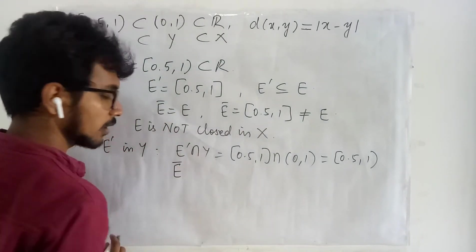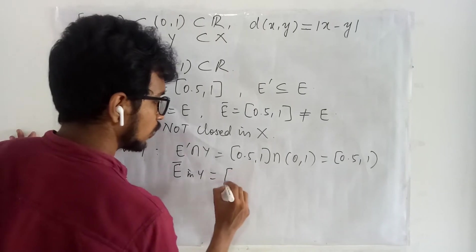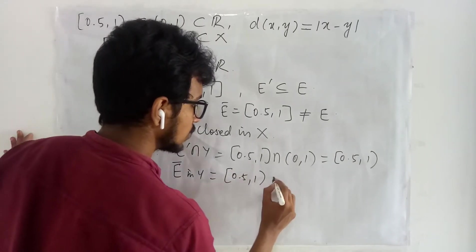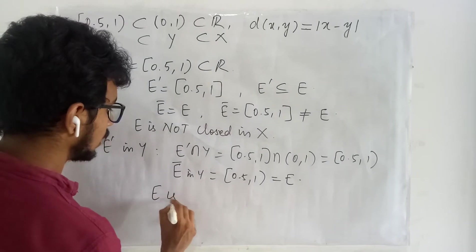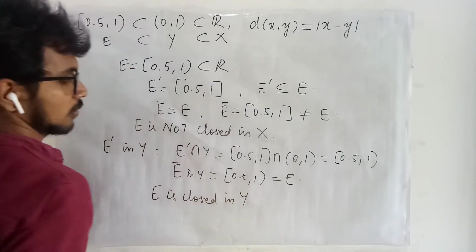Here also when you try for the closure in Y you will get what? [0.5,1) which is same as that of your E. Therefore your E is closed in Y.